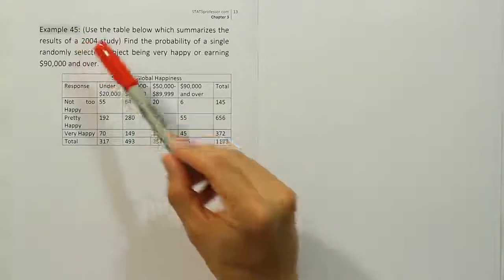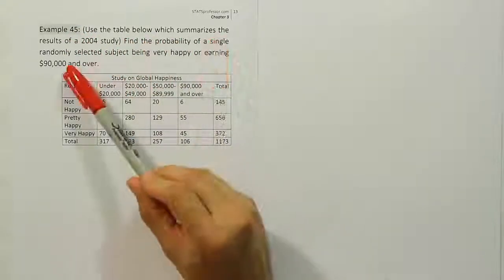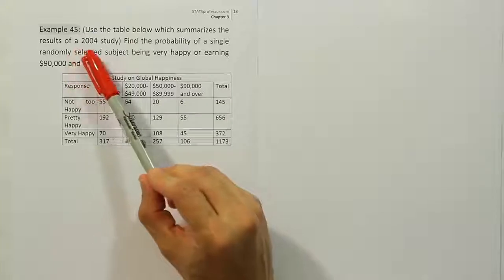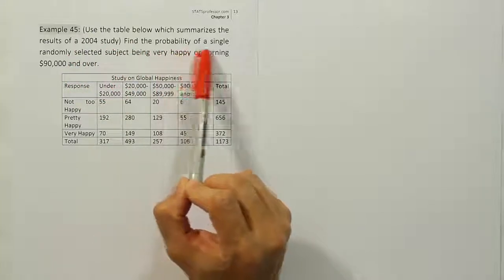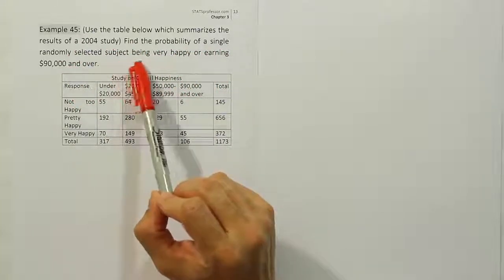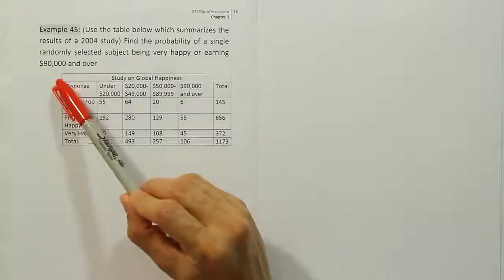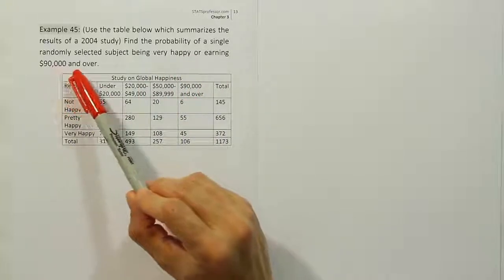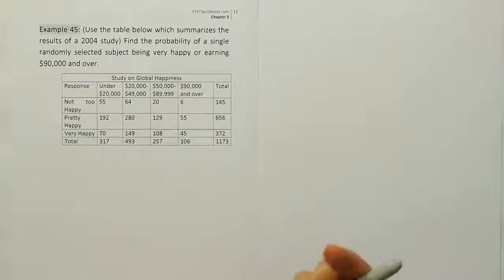Example 45. Use the table below which summarizes the results of a 2004 study. Find the probability of a single randomly selected subject being very happy or earning ninety thousand or more per year.